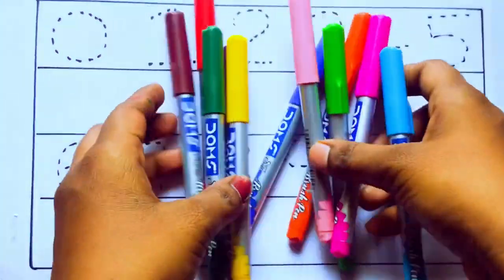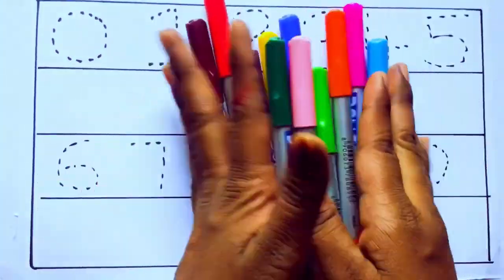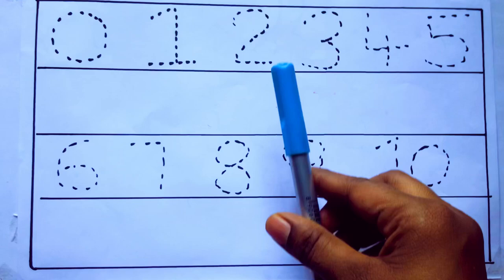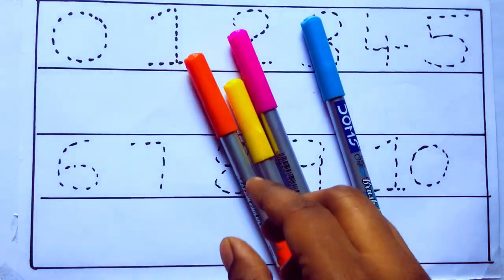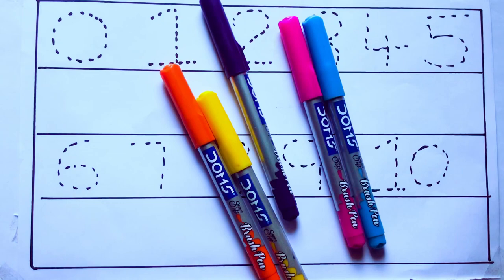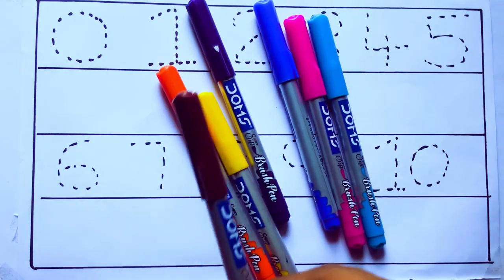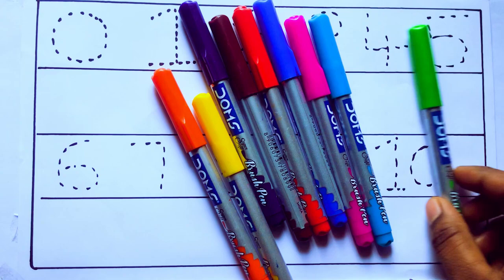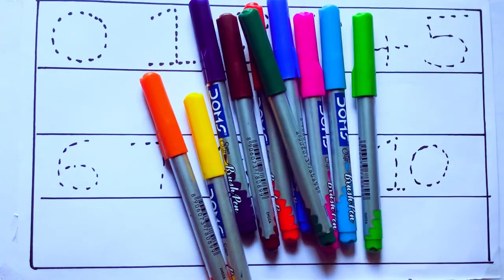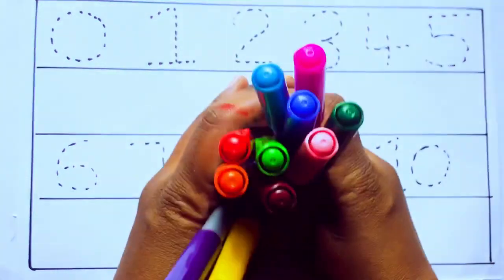Let's learn some colors. These are all the color pencils. Let's learn the names: sky blue color, pink color, yellow color, orange color, violet color, blue color, brown color, red color, green color, and pink color.